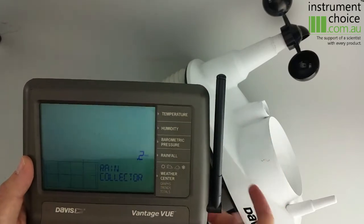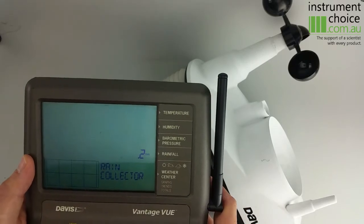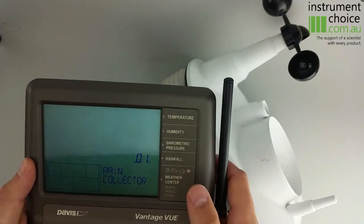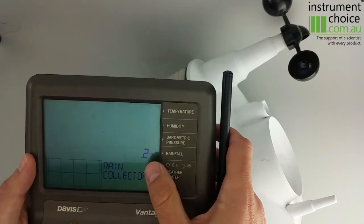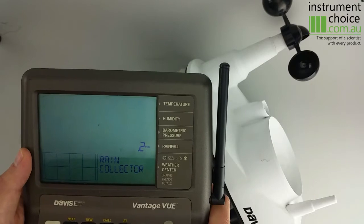From here, it'll take you through to your rain collector. As we're based in Australia, we use the 0.2 mil collector. It should be on that as a default, but if you need to change it, just push the plus arrow or minus arrow until it shows you 0.2 of a mil. You then hit the Done arrow.